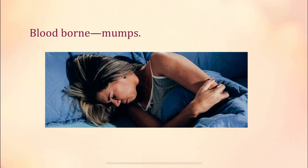The third route is through blood. Blood-borne mumps — mumps is a viral infection caused by paramyxovirus, which usually affects the salivary glands. Through the blood, it can enter the ovaries. In females, it will produce oophoritis, whereas in males it will produce sterility.